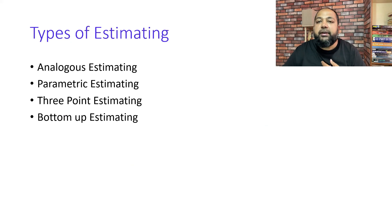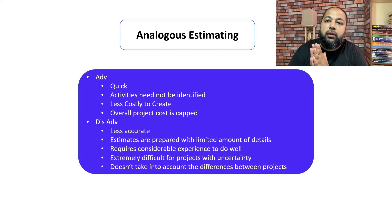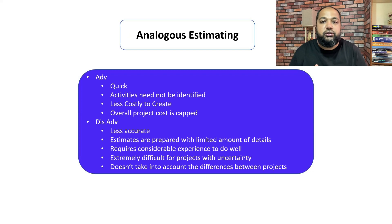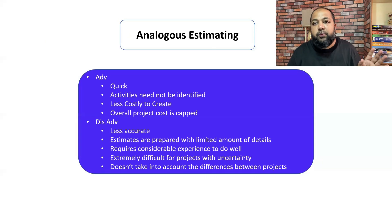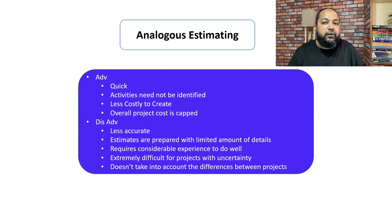There are four types of estimating techniques: analogous, parametric, three-point, and bottom-up estimating. For analogous estimating, advantages include: it's quick, activities need not be fully defined, it's less costly to create, and gives an overall project cap. Disadvantages: it's less accurate, provides limited information, could be wrong, requires considerable experience, is difficult for project uncertainty, can't easily be used on agile projects, and doesn't account for differences between projects.